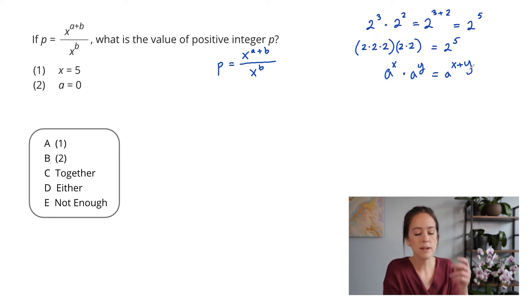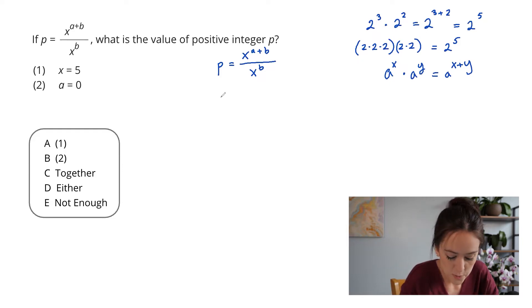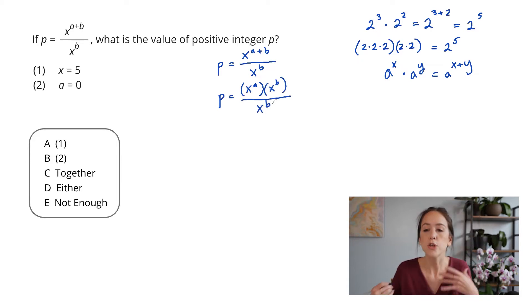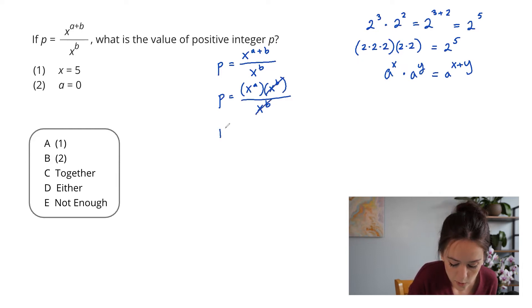Okay, so now we can look at this question stem here and say, I see we are going to rewrite the top of our fraction as x to the a times x to the b over x to the b. This is going to give me a huge step forward, which is that I can actually cancel my x to the b's, leaving me with that p is x to the a.